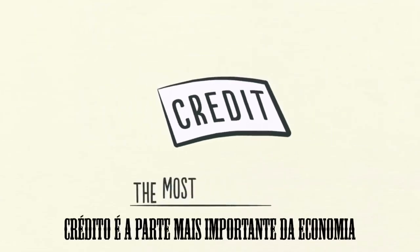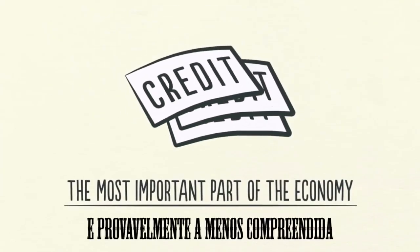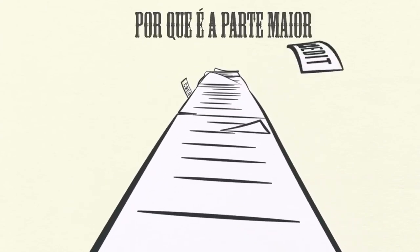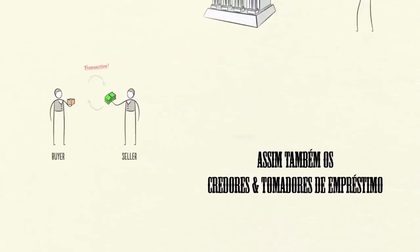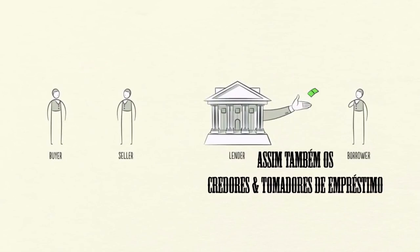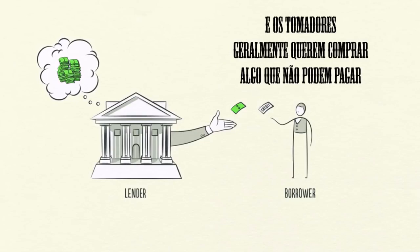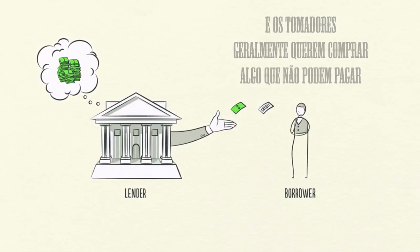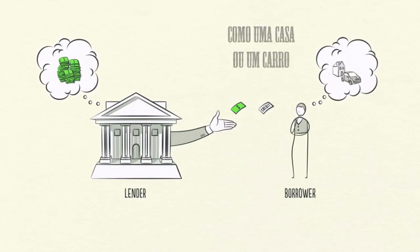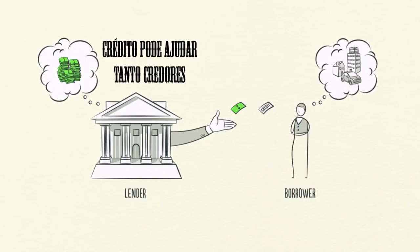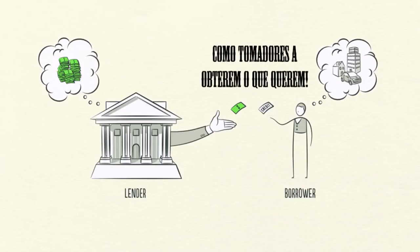Credit is the most important part of the economy and probably the least understood. It's the most important part because it's the biggest and most volatile part. Just like buyers and sellers go to the market to make transactions, so do lenders and borrowers. Lenders usually want to make their money into more money, and borrowers usually want to buy something they can't afford, like a house or a car, or they want to invest in something like starting a business.